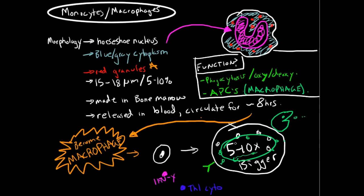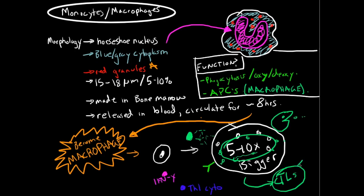Macrophages are initially activated by the act of phagocytosis, Th1 cytokines, interferon gamma, inflammatory mediators, and bacterial components. Once activated, macrophages exhibit enhanced phagocytic activity, killing ability, secretion of inflammatory mediators, and the ability to activate T lymphocytes. These can then go on to activate cytotoxic T lymphocytes, which are deadly to bacteria.